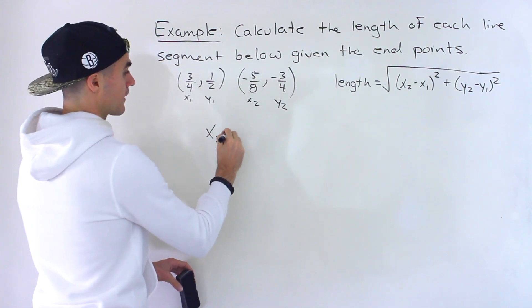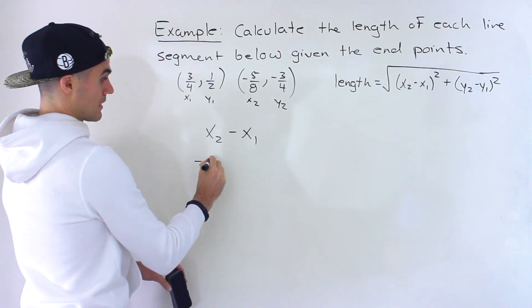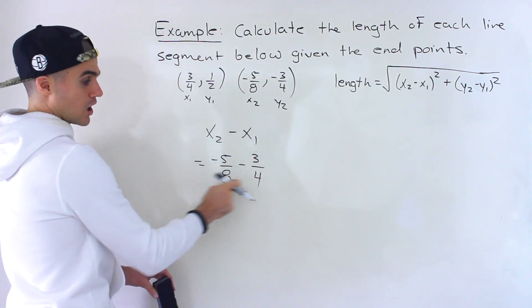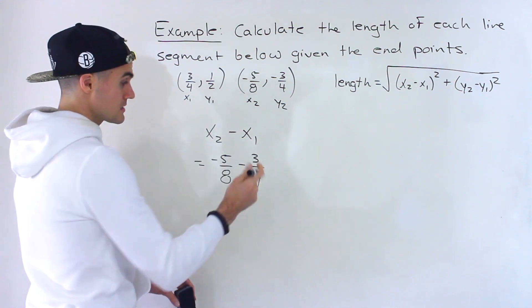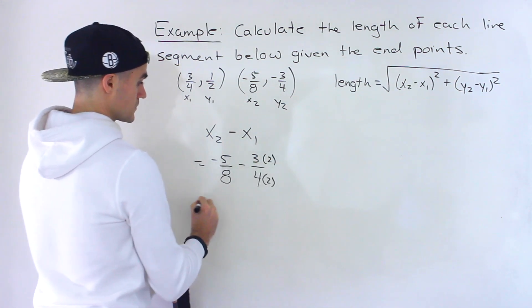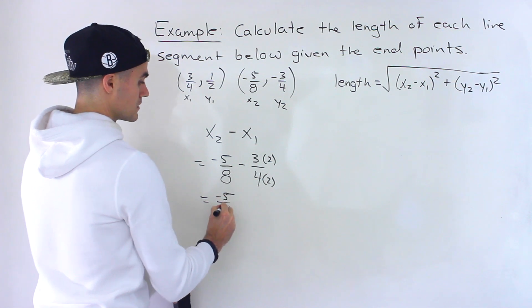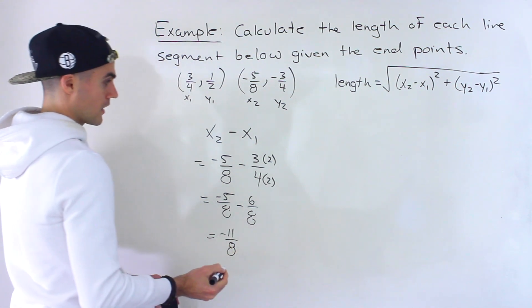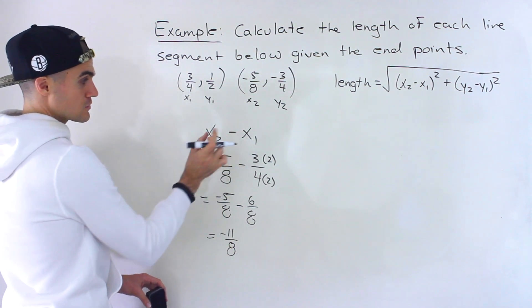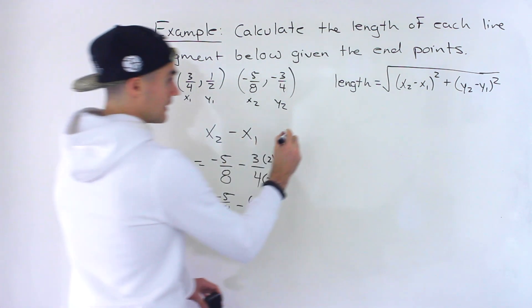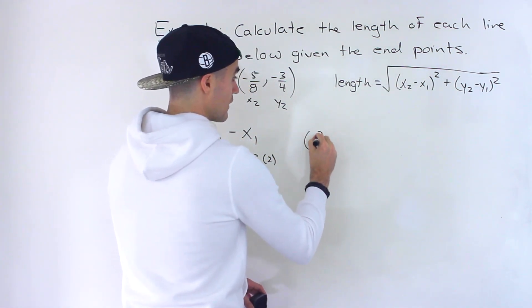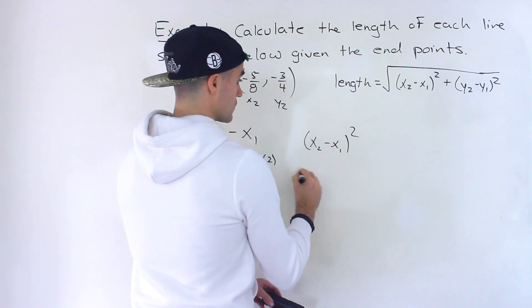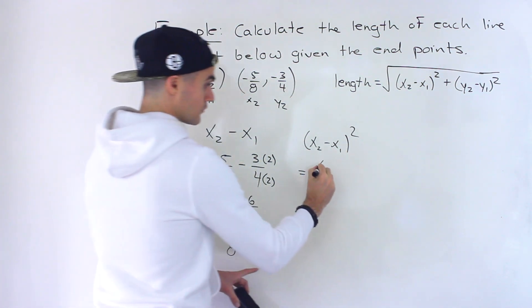So we'll have, let's do the bracket x2 minus x1 first. So that would be negative 5 over 8 minus 3 over 4. Common denominator between these would be 8. So multiply this by 2, multiply this by 2. So we'd have negative 5 over 8 minus 6 over 8, which would give us negative 11 over 8. So that's the x2 minus x1, right? But now notice that we have to square it. So what would that give us? It would be x2 minus x1 squared. So if we do that, we know x2 minus x1 is negative 11 over 8.